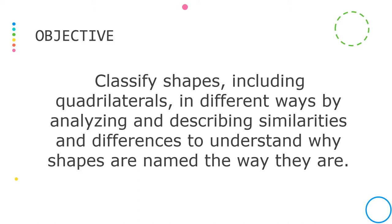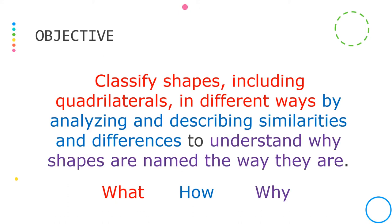This is a very wordy objective so let's go ahead and take a second to break this down. Our what for today is that we will be classifying shapes, primarily focusing on quadrilaterals, taking a look at how they all differ. We're going to do that by analyzing and describing how these shapes are similar and how they are different, so that we can better understand why shapes are named the way they are based on the attributes that they have.